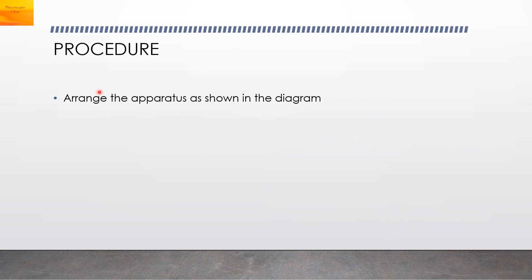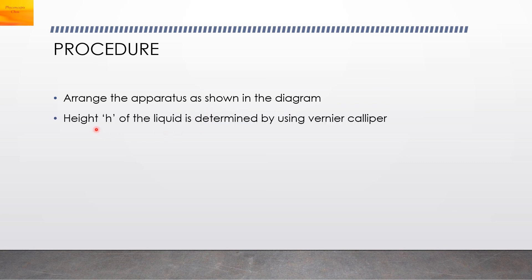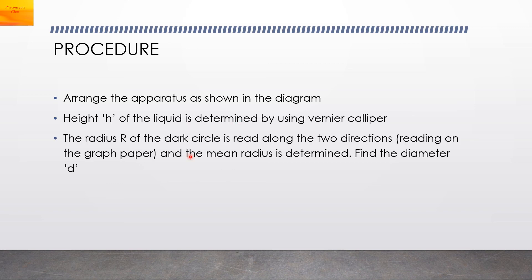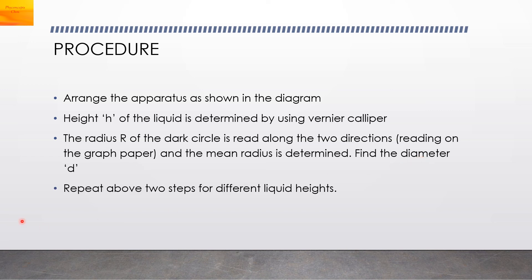Procedure: Arrange the apparatus as shown in the diagram. The height h of the liquid is determined using vernier calipers. The radius r of the dark circle is read along two directions on the graph paper, and the mean radius is determined — then the diameter is calculated or directly measured on the graph paper. Repeat these steps for different liquid heights.